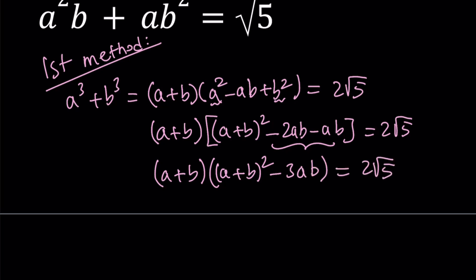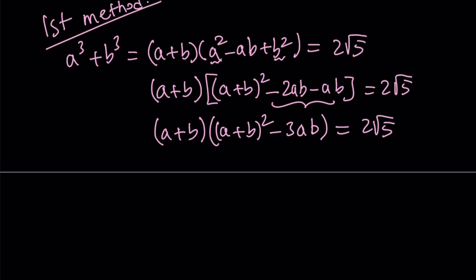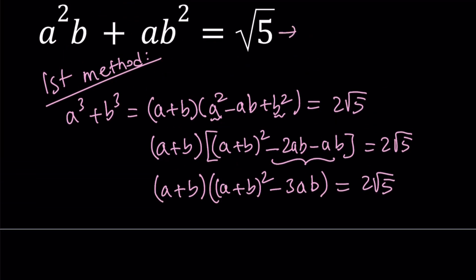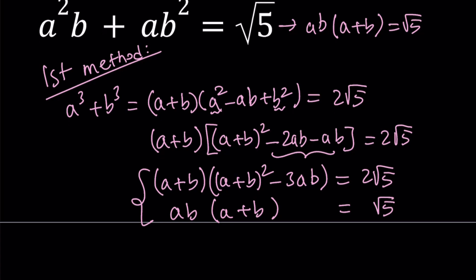So now we have this equation, and then we have the other equation. Now, the second equation can be factored as well. We can take out an ab and we're going to get (a+b) = √5. Let's go ahead and write that down here. ab(a+b) = √5. So this is our system and we're going to solve that system.